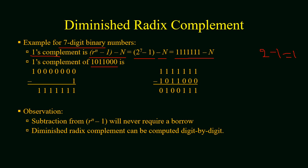So its 1's complement will be 2^7 - 1, which equals seven 1's (1111111), and then subtracting the given number we will get the answer 0100111.